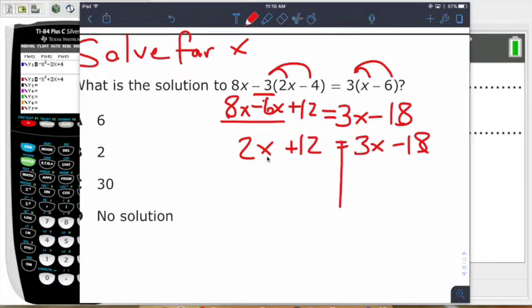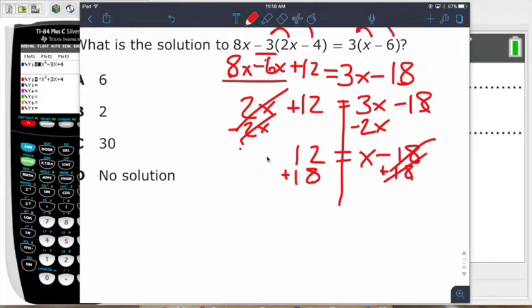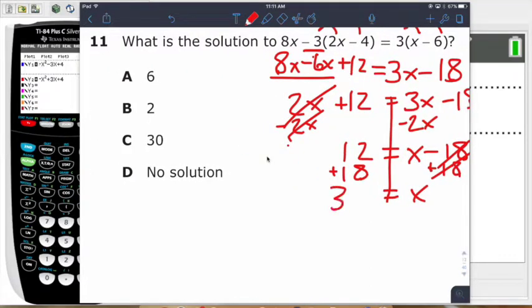Next is you want to get your x's together on one side. So what we need to do is subtract 2x from both sides. We're going to be left with x minus 18, and then that is equal to 12. And then we're going to add our 18 to both sides. With algebra, think about opposites. Always doing the opposites. So that's x and then equals 30 in this case.